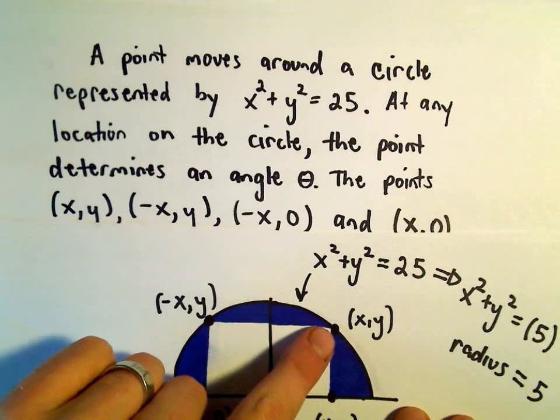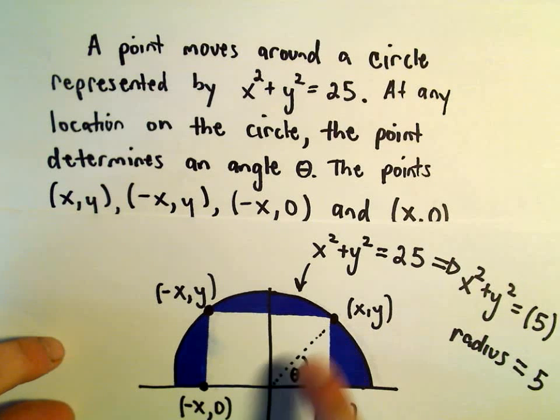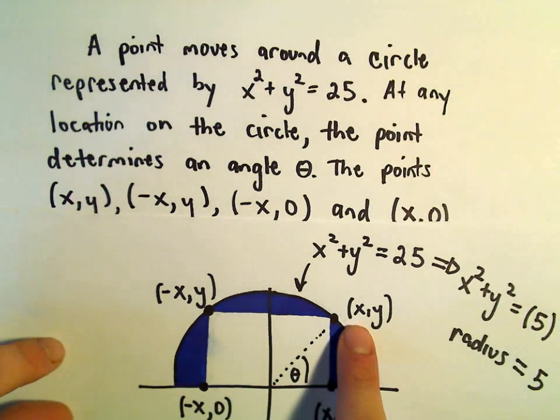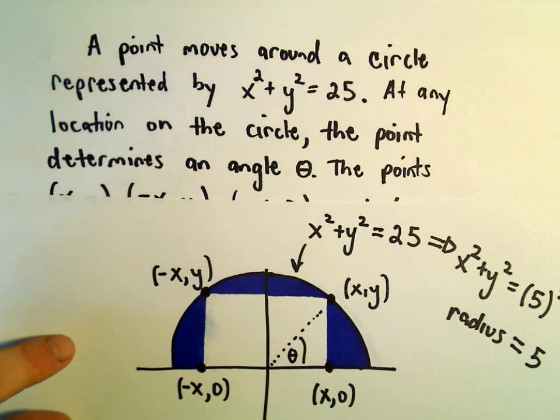So here's our point (x,y) on the circle. It's also going to be a corner of the rectangle. So here's (x,y). That would make this (-x,y). If we drop that down, this would be the point (-x,0), and (x,0).